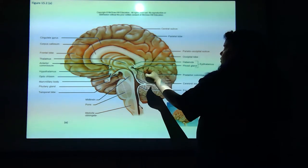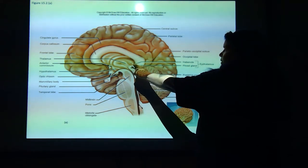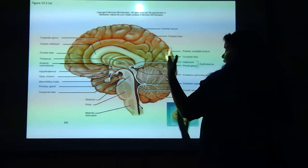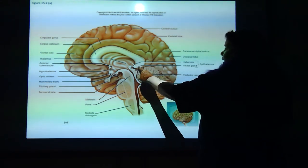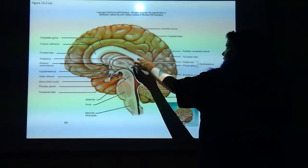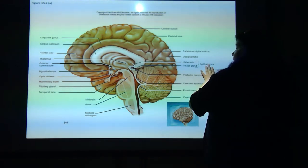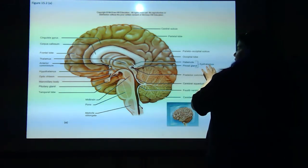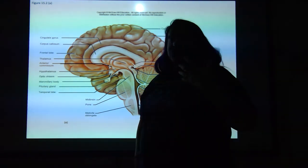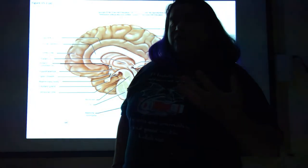Back here you have the habenula, which is basically one of the parts of the diencephalon, and the pineal gland, which is back here. These two consist of the epithalamus. The habenula is a part of the brain that associates smells with memories. For example,